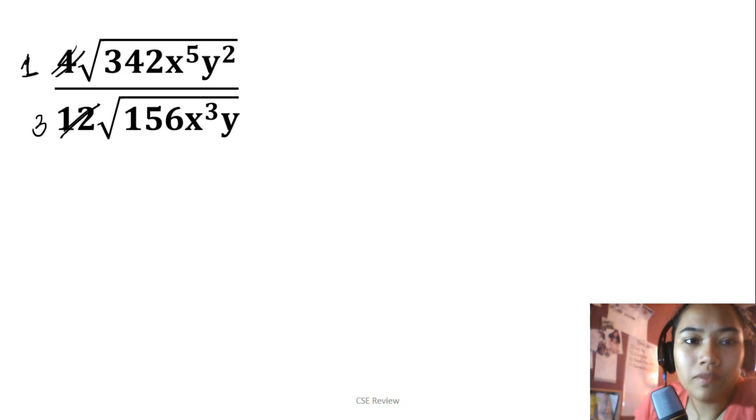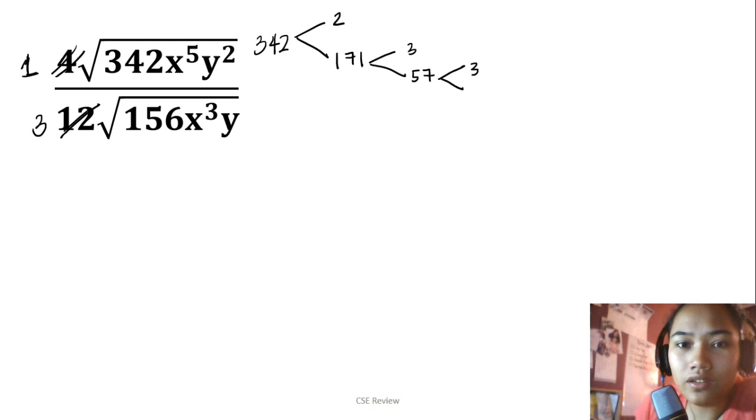The next thing you could do is deal with the ones inside the radical. For 342, it's divisible by 2, giving 171. Then 171 is divisible by 3, giving 57. 57 is divisible by 3, giving 19. We can't factor 19 further - the only numbers that divide 19 are 19 and 1, so we're done there.